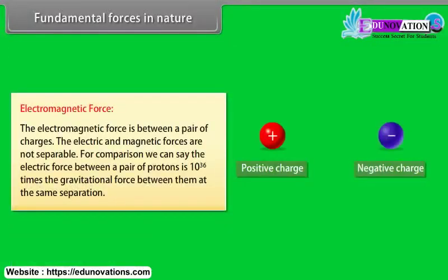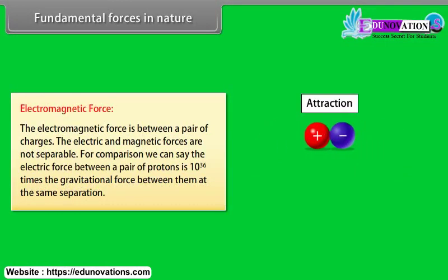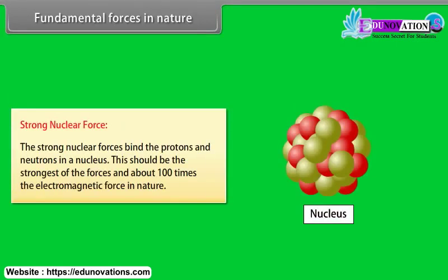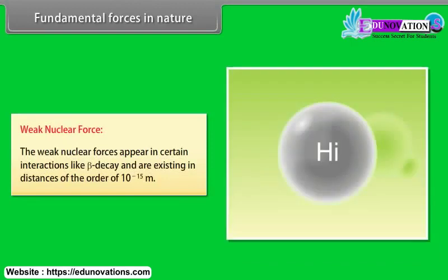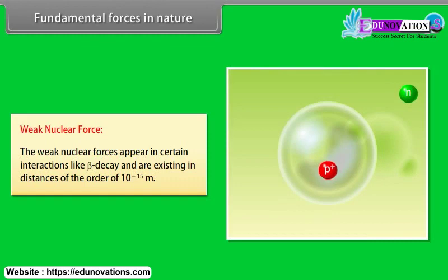The electromagnetic force acts between a pair of charges. The electric and magnetic forces are not separable. For comparison, the electric force between a pair of protons is 10 raised to the power 36 times the gravitational force between them at the same separation. The strong nuclear forces bind the protons and neutrons in a nucleus; this is the strongest of the forces and about 100 times the electromagnetic force. The weak nuclear forces appear in certain interactions like beta decay and exist at distances of the order of 10 raised to the power minus 15 meters.